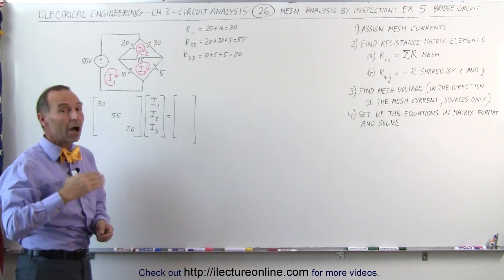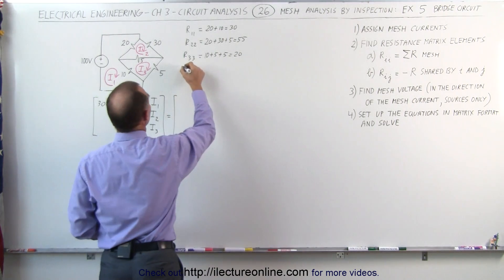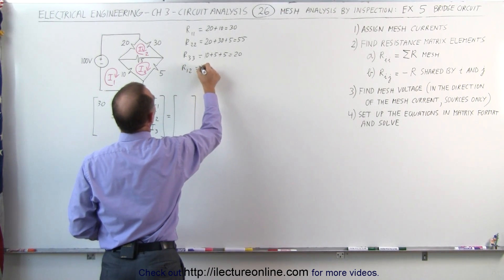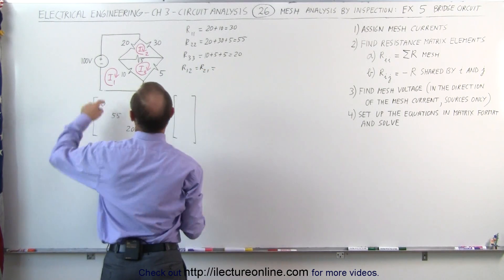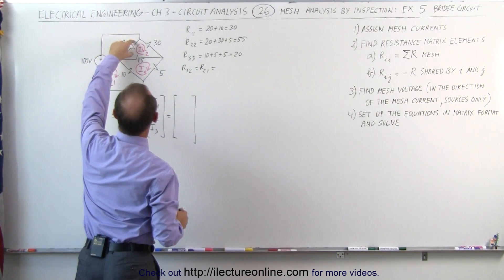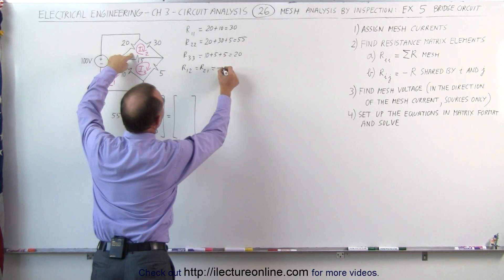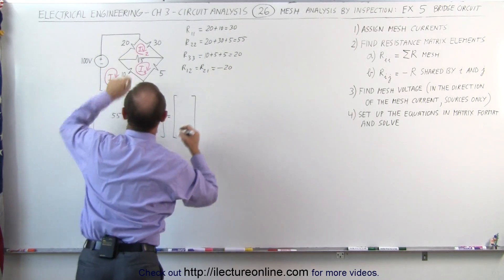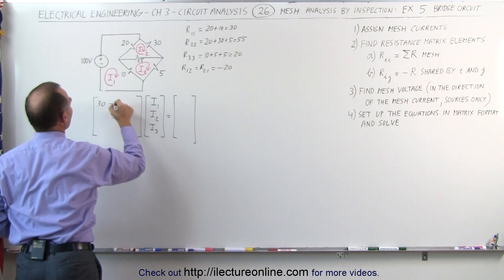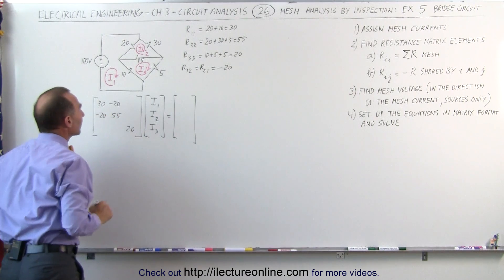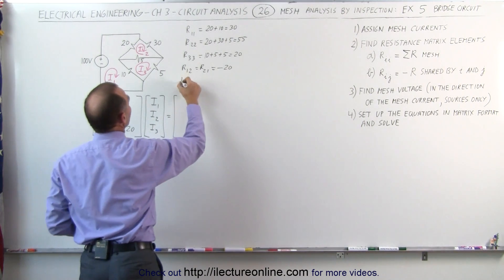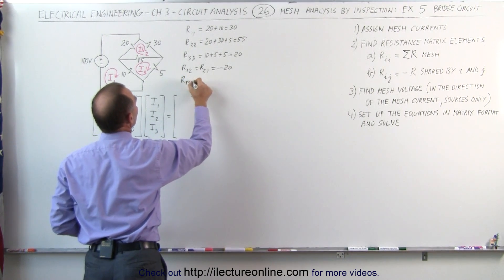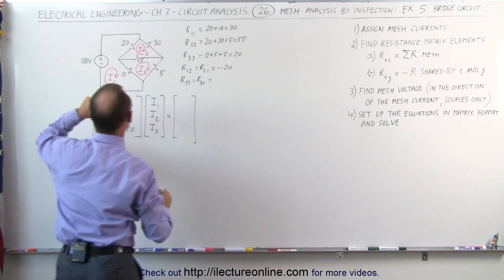Now we need to find the off diagonal elements. We need to find R12, which is the same as R21. So 1 and 2 share a single resistor, 20 ohms. We need to put a negative in front of that. That's minus 20, which means that this becomes minus 20, and this becomes minus 20.